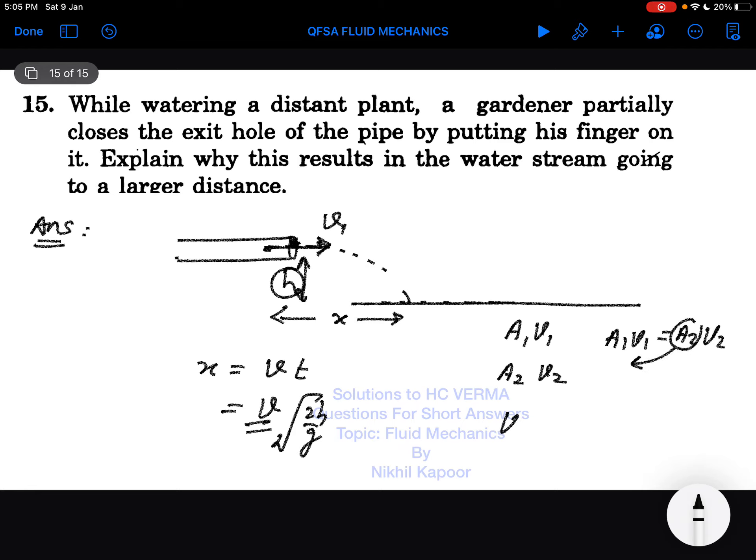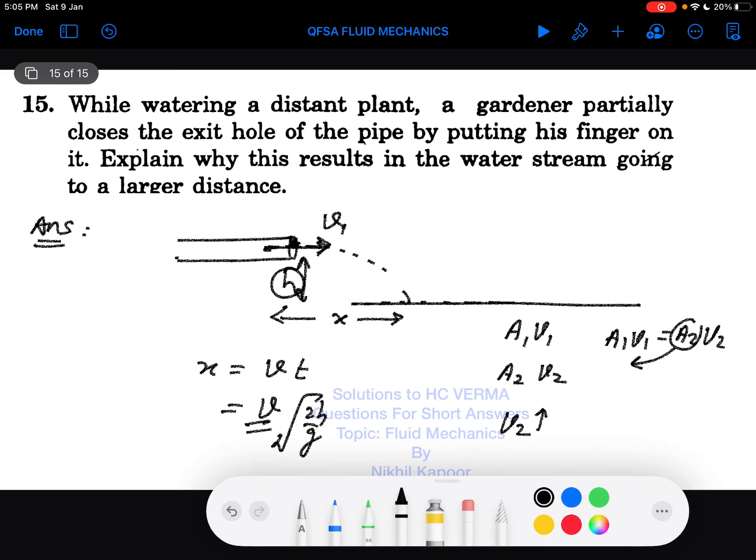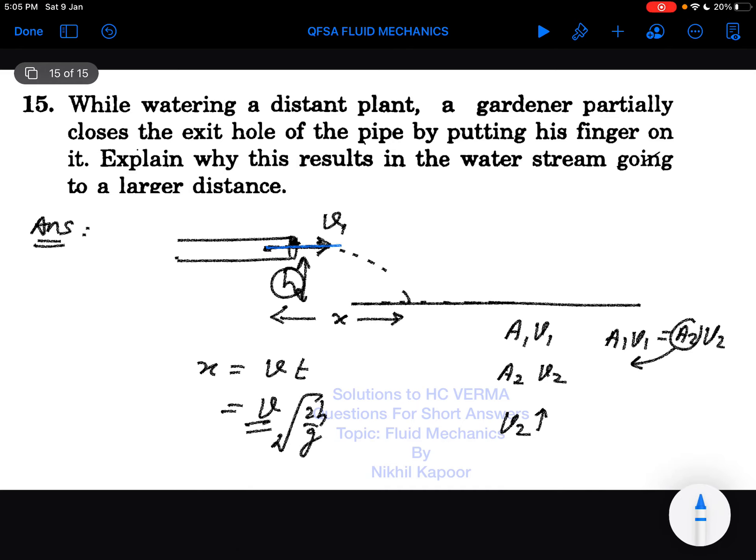So by partially closing the pipe, the water is coming out with a greater speed. The height is the same, so as it is coming out with greater speed, it will fall to a greater horizontal distance over that plant where it is required.